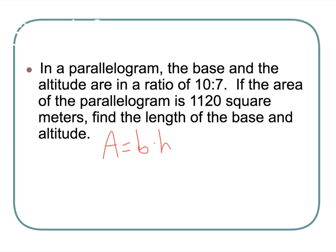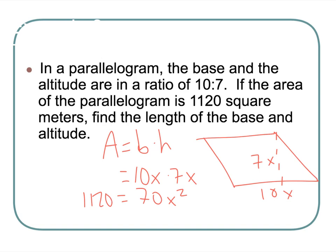Area equals base times height. The base and altitude are in a ratio of 10 to 7, so let's draw a picture. Base is 10x, altitude is 7x. So I've got 10x times 7x, that's 70x squared. My area we already know is 1120. I'm going to divide by 70 to get my x squared alone. 112 divided by 7 would be 16, so x squared equals 16.